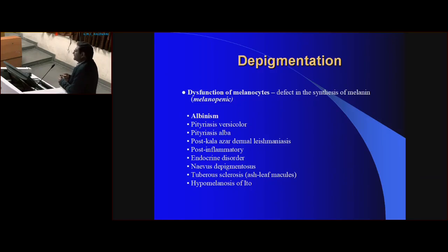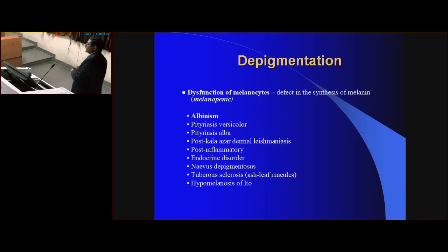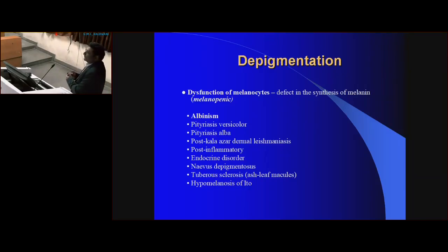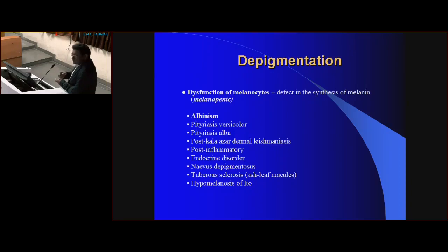Other causes of hypopigmentation include pityriasis versicolor, where you can see hypopigmentary macules on the trunk, pityriasis alba, PKDL (post-kala-azar dermal leishmaniasis), and endocrine disorders. Tuberous sclerosis is another cause.